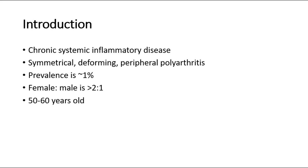For epidemiology, the prevalence is around one percent and smokers are at a higher risk of having rheumatoid arthritis. The female to male ratio is more than 2 to 1, meaning females are more prone to rheumatoid arthritis. The peak onset of age is around 50 to 60 years old.